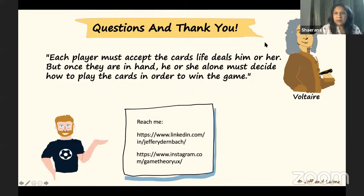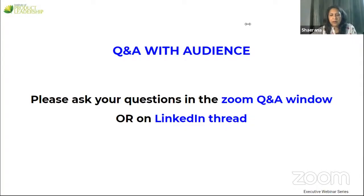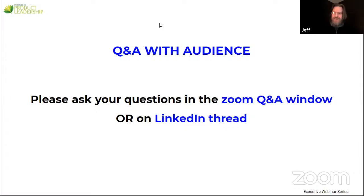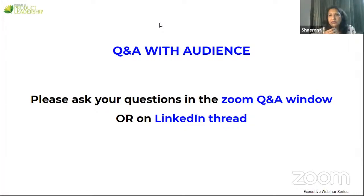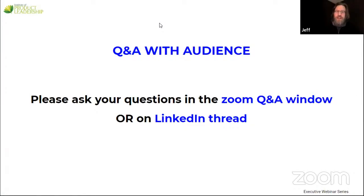Thank you, Jeff — that was a very enlightening and interesting session. Participants can ask questions in the Q&A window or comment sections on LinkedIn. First question: 'How can we use explore-with-questions in easy-to-ignore and Nash equilibrium situations?' Jeffrey responds: Let me make sure I understand — is the idea to specifically explore questions toward reaching Nash equilibrium? Because Nash equilibrium is simply the point you're trying to get to — the optimal result.